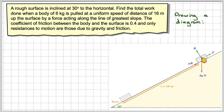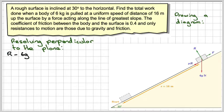Okay, so if we resolve first of all perpendicular to the plane, we're going to have that r minus 6g... the vertical component would be this one here where this is 30 degrees. So this will be 6g cos of 30 degrees. So minus 6g cos 30 degrees would be equal to 0 because it's not moving in that direction.